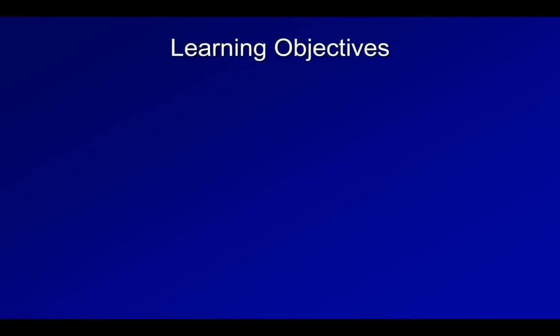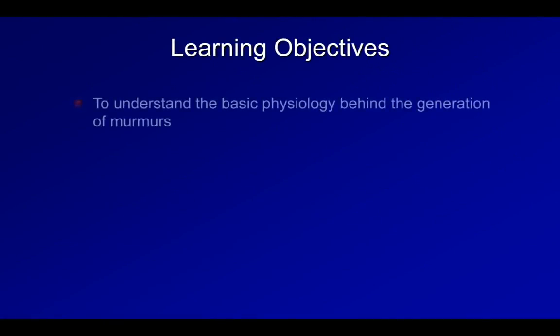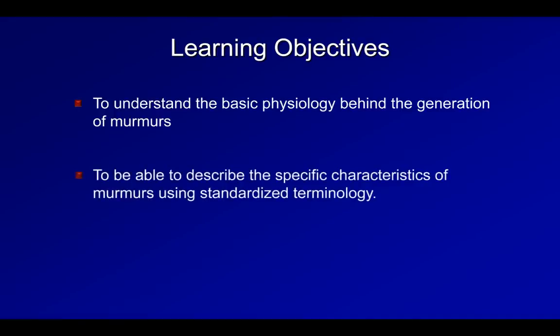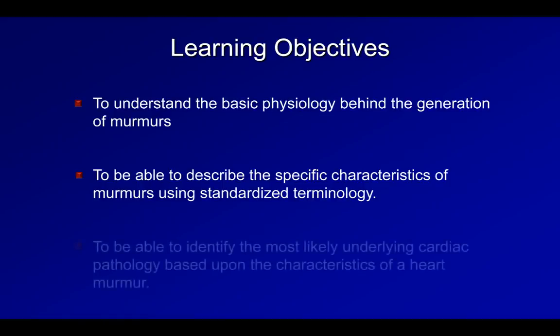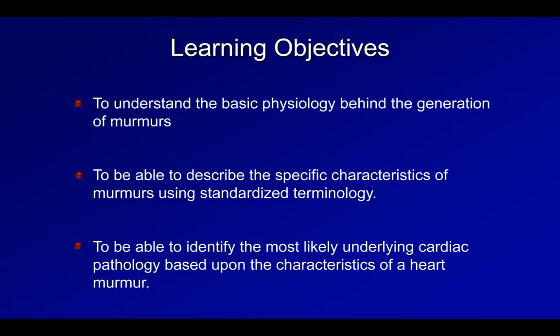Here are the learning objectives of this talk. First, to be able to understand the basic physiology behind the generation of murmurs. Second, to be able to describe the specific characteristics of murmurs using standardized terminology. Finally, to be able to identify the most likely underlying cardiac pathology based upon the characteristics of a heart murmur. There will be many audio clips along the way, and to assist with the last learning objective, there will be five example cases at the end where you will be asked to identify the underlying cardiac disease from an audio clip.